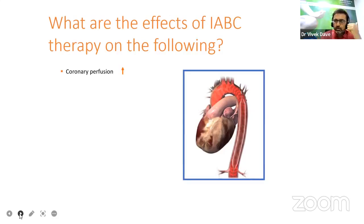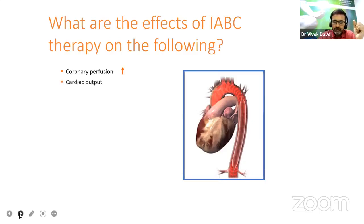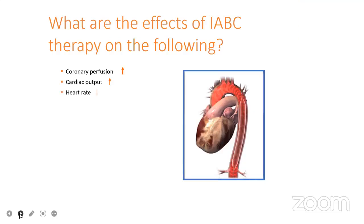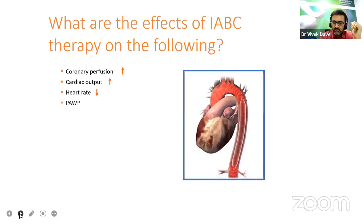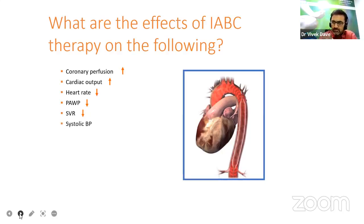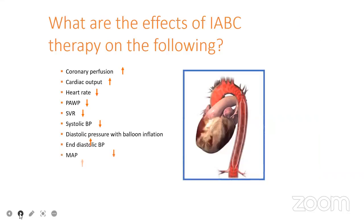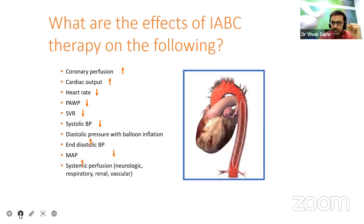As mentioned, coronary perfusion will increase — it helps the coronaries because whenever there is ischemic cardiomyopathy, there is a blockage in major coronary arteries, causing coronary perfusion to decrease. IABP helps in regaining the coronary perfusion, eventually leading to increased cardiac output. It reduces the heart rate; deflation causes decrease in sympathetic stimulation. It reduces PAWP — pulmonary arterial wedge pressure — and decreases systemic vascular resistance, which is what is required in severe ischemic cardiomyopathy. It decreases systolic blood pressure and increases end-diastolic pressure with balloon inflation, causing afterload reduction by deflation of the intra-aortic balloon pump.